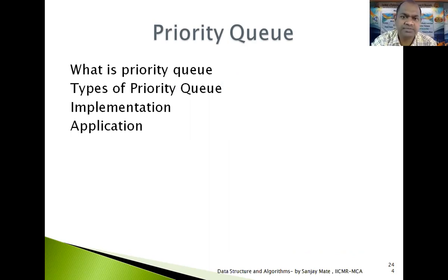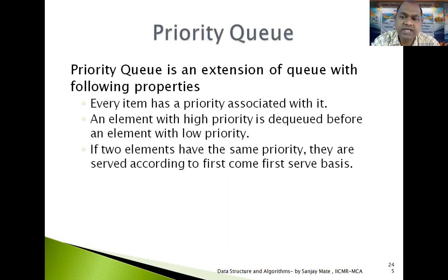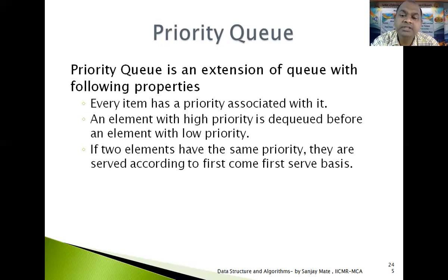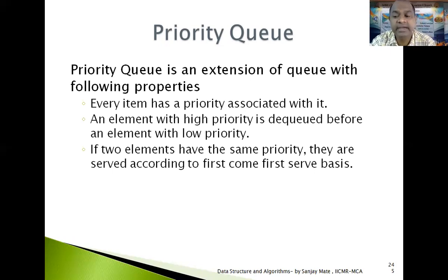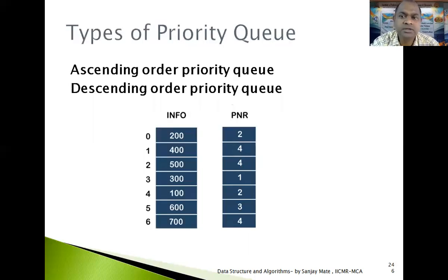Priority queue is the extension of the queue. In this, every element is having a priority with it. An element with a higher priority will be deleted first before the element which is having the lower priority. If two elements are having the same priority, then on the basis of first come first, the element will be deleted. There are two types: ascending order priority queue and descending order priority queue.